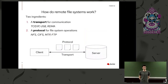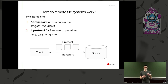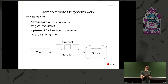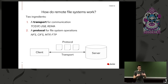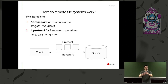Now let's start talking about how it all works. The two main components of a remote file system are the transport and the protocol. The transport is the communications link — it allows a client to mount a file system from a server, where files and directories live on the server and the client can access them. The protocol is the vocabulary the client has to express things it wants to do with the files.